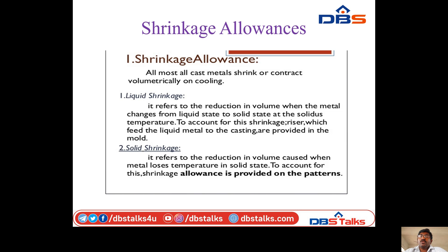The second type is solid shrinkage — the reduction in volume caused when the metal loses temperature in the solid state. Shrinkage allowance is provided on the patterns to account for this.